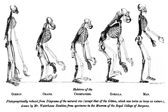But he precedes that remark with: "Analogy would lead me one step further, namely, to the belief that all animals and plants have descended from some one prototype. But analogy may be a deceitful guide." And in a subsequent edition he asserts: "...we do not know all the possible transitional gradations between the simplest and the most perfect organs. It cannot be pretended that we know all the varied means of distribution during the long lapse of years, or that we know how imperfect the geological record is. Grave as these several difficulties are, in my judgment they do not overthrow the theory of descent from a few created forms with subsequent modification."